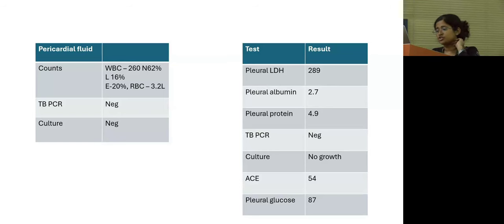TB-PCR was negative. Culture showed no growth, and pleural glucose levels were 87. Similarly, pericardial fluid analysis was also done, which was showing WBC counts of 260, with eosinophil counts of 20%. It was a hemorrhagic fluid that was found on pericardiocentesis. TB-PCR was negative, and culture also did not show any growth.